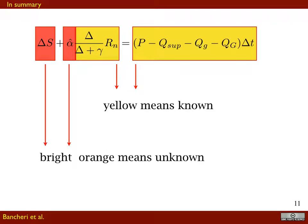To put it all together, the unknowns are marked in bright orange while the yellow part can be considered known. In this case we have two unknowns and just one equation, which makes it difficult to close the budget.